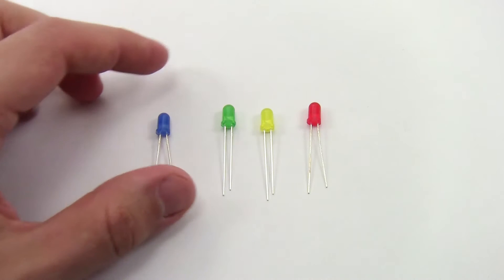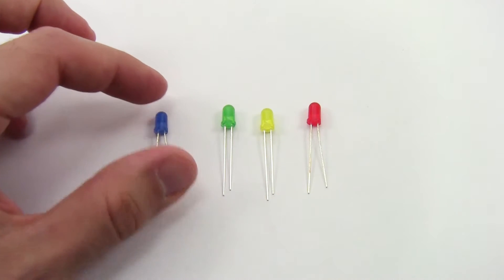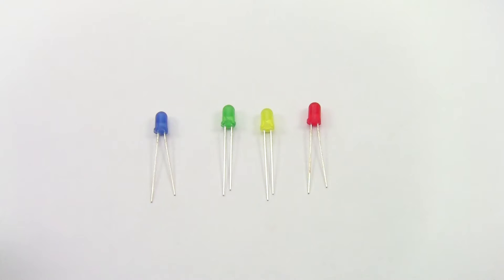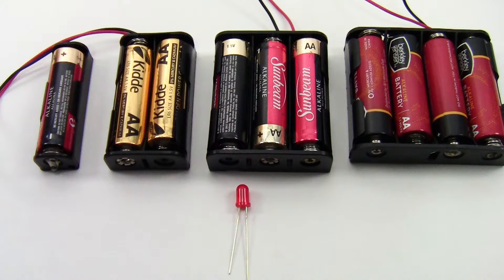A typical 5 millimeter LED like these will be rated for 20 milliamps and somewhere between 2 and 4 volts depending on the color. After you've chosen your LED you're going to need to choose a power supply.